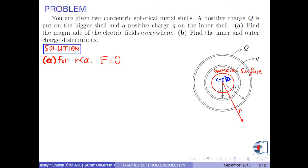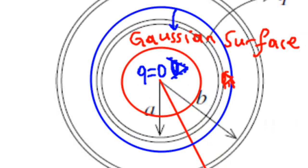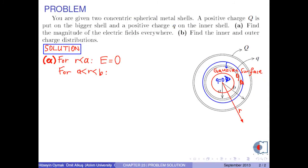For the region where R is greater than A and less than B — that is the region between the shells — if we draw a Gaussian surface enclosing this region and look inside, we see only the charge of the inner shell, which is Q. According to the shell theorem, this charge can be considered as if it is concentrated in the center. As a result, the electric field is found by K times Q over R squared.